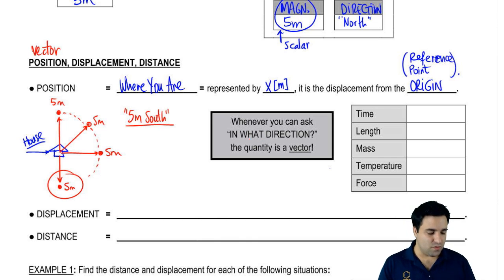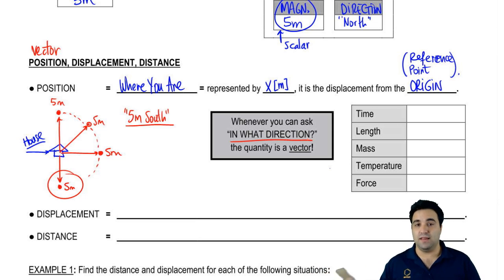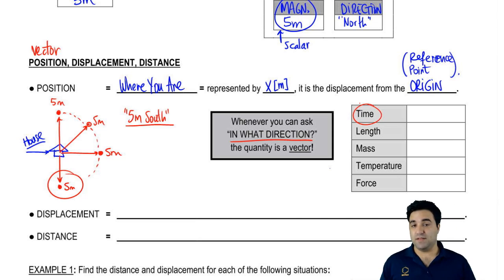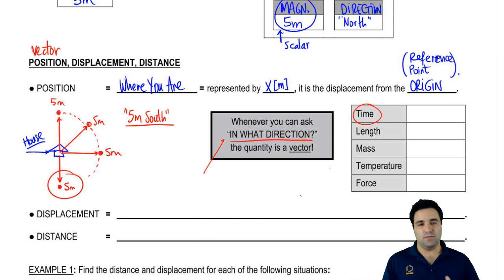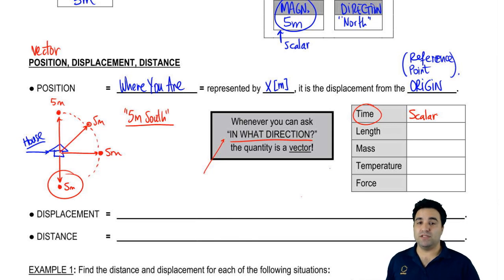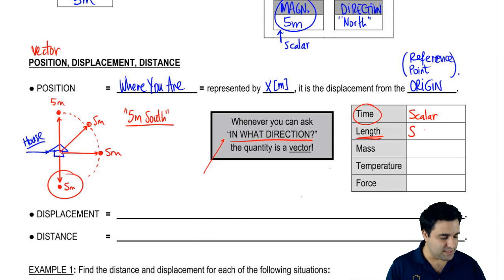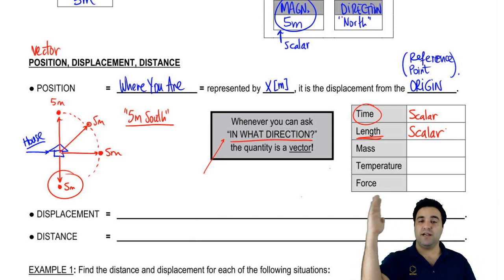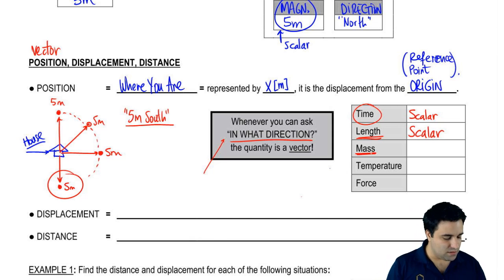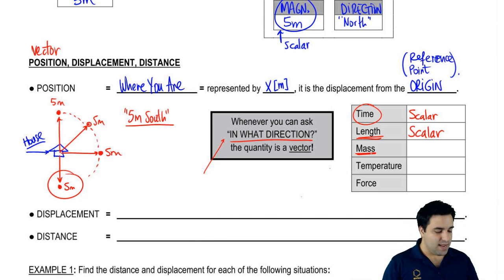Here's the idea: whenever you can ask 'in what direction?', that quantity is a vector. For example, 'I ran at five meters per second' — did you run to the left or to the right? That's a vector. Let's do some quick examples. Time: one hour has 60 minutes — asking 'in what direction is those 60 minutes?' makes no sense. So time is a scalar. Length: an object is one meter long. The direction of the object doesn't change its length, so length is a scalar. Mass: you are 150 pounds — it makes no sense to ask 'in what direction are you 150 pounds?' So mass is a scalar.